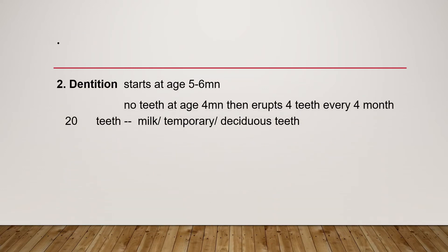Dentition starts at five to six months of age. To estimate the average number of teeth starting from four months: four teeth erupt every four months until 20 milk teeth are achieved, which occurs at around two to three years of age.